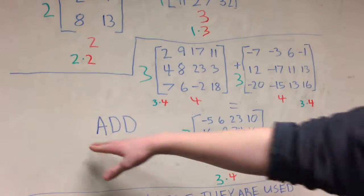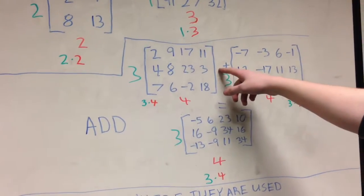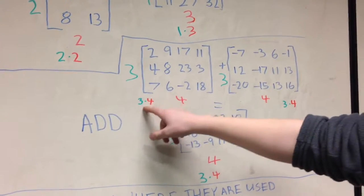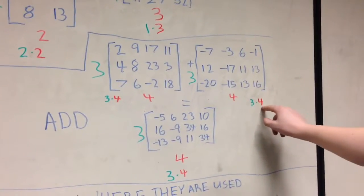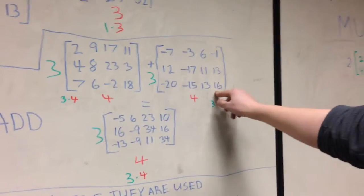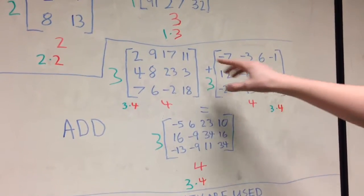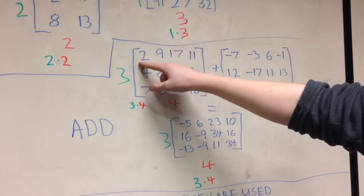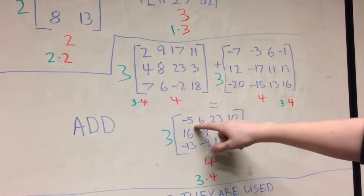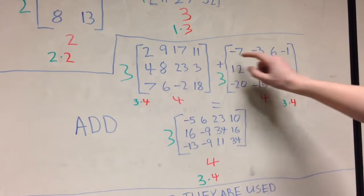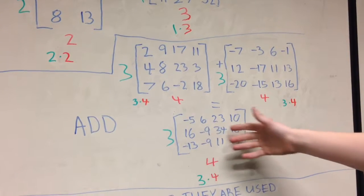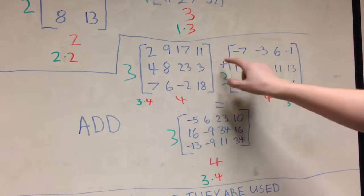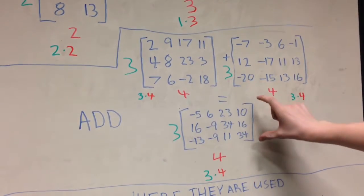So this is how you add matrices. To add or subtract matrices they have to have the same number of rows and columns. You can see both of these are three by four matrices because they have three rows and four columns. You take the corresponding numbers and add or subtract them together. So two plus negative seven is negative five, nine plus negative three is positive six, and so on until you've solved the matrix.